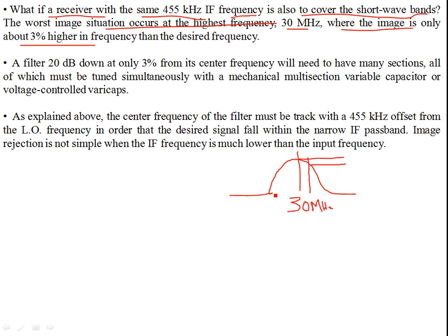In order to have a very sharp or high-Q response, you need a higher-order bandpass filter. A higher order N2 is greater than N1, which means you need more sections — more LC-tuned bandpass filters or coupled resonators. A filter 20 dB down at only 3% from the center frequency will need many sections, and all of which must be tuned simultaneously. So there's more tuning required, adding hardware complexity.